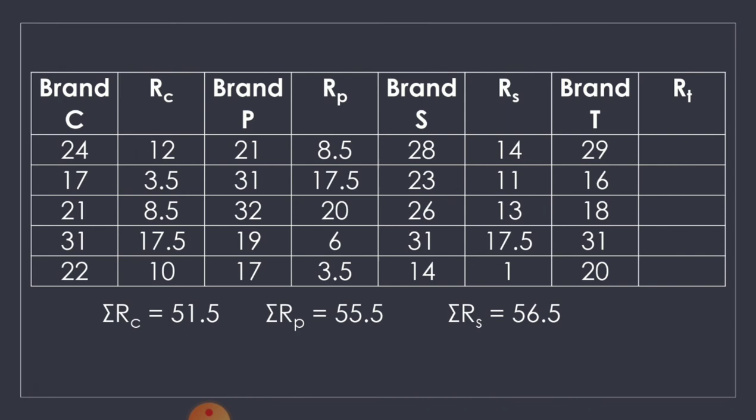And lastly, for Brand T, the ranks are 15, 2, 5, 17.5, and 7. The sum of it is 46.5.